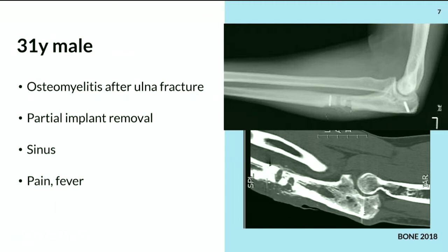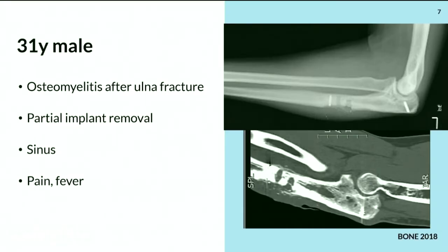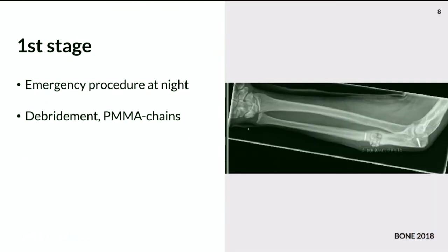Another case: upper extremity osteomyelitis of the proximal ulna after fracture. There was only partial implant removal and persistent osteomyelitis. The question is what to do — one stage or two stage, remove everything. The patient showed up with pain and fever and was immediately treated. My colleagues performed debridement and placed some chains, but did not remove the screws.